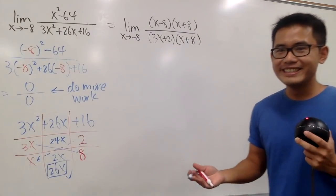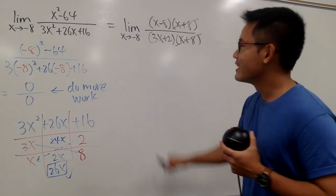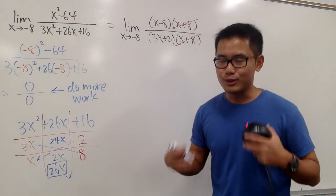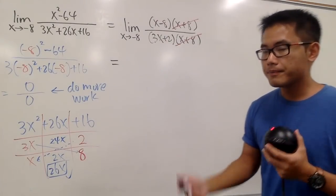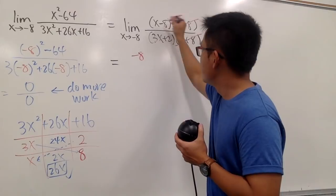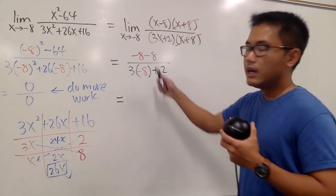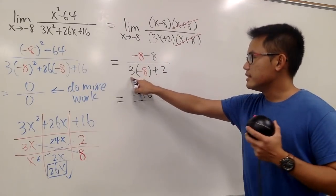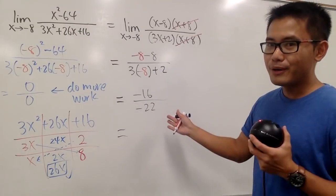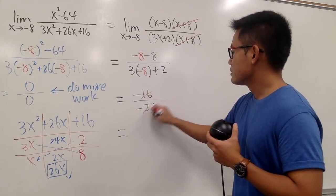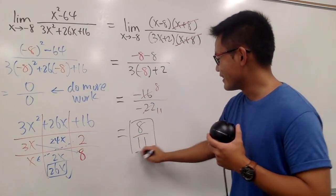We see that (x + 8) on the top cancels with (x + 8) on the bottom. Now plug in negative 8: numerator is negative 8 minus 8, which is negative 16. Denominator is 3 times negative 8 plus 2, which is negative 24 plus 2, or negative 22. Simplifying the fraction — 2 goes into 16 eight times, 2 goes into 22 eleven times — gives 8 over 11. That's our answer.